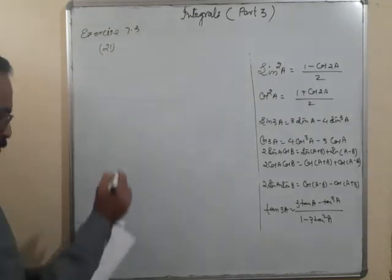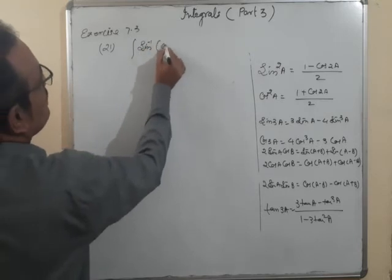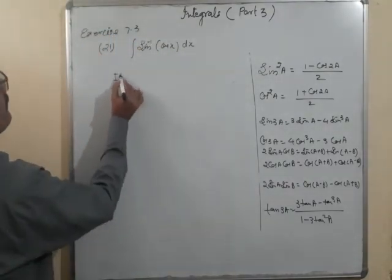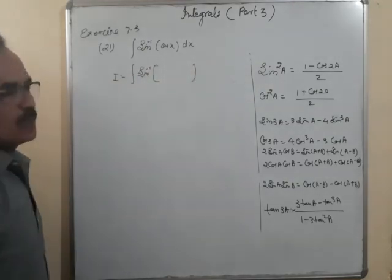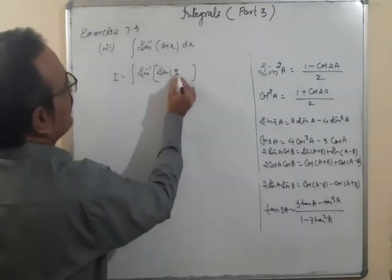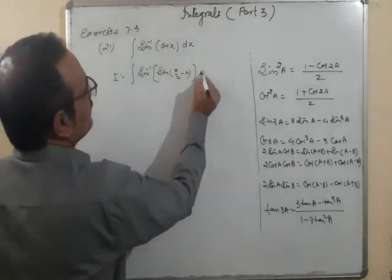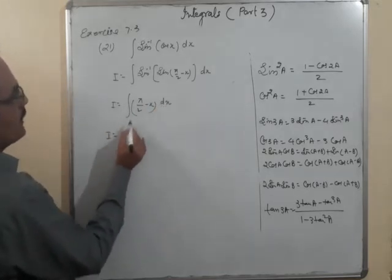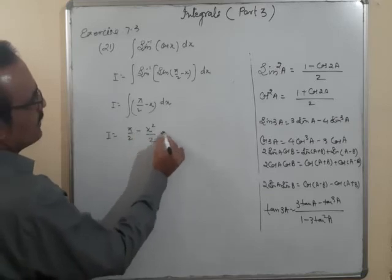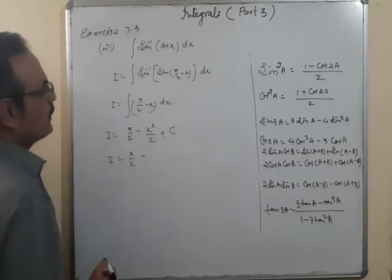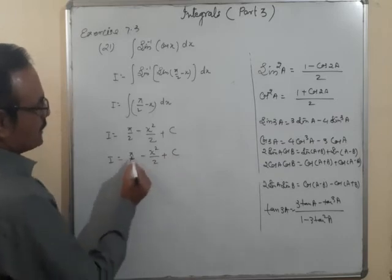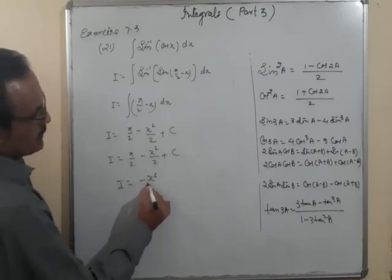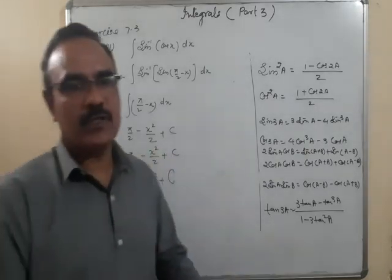Question 21: integrate sin⁻¹(cosx) dx. Convert cosx to sine form: cosx = sin(π/2 − x). So I = ∫sin⁻¹(sin(π/2 − x)) dx. The sin⁻¹ and sin cancel, giving I = ∫(π/2 − x) dx = (π/2)x − x²/2 + C. Since π/2 is a constant, we can write I = −x²/2 + C (absorbing the constant).